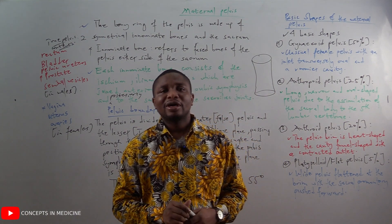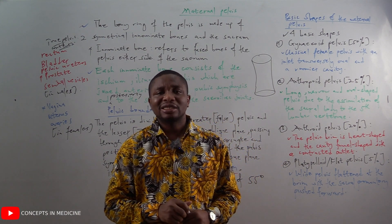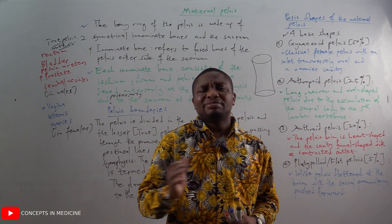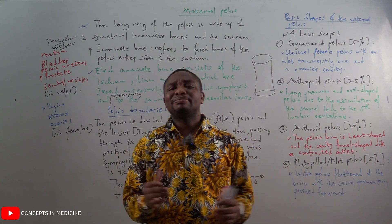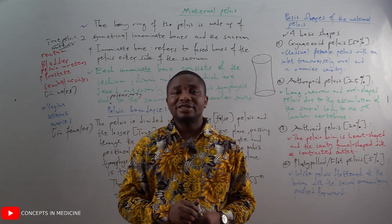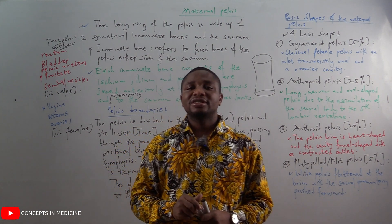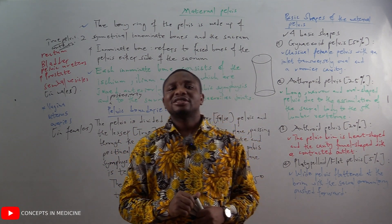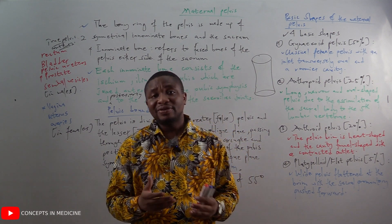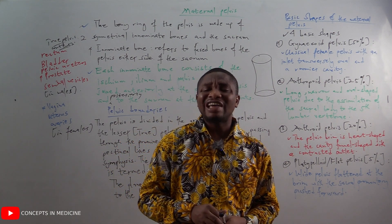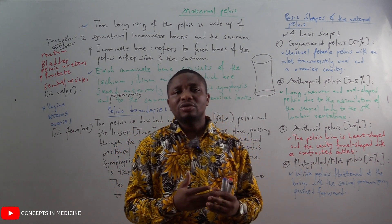The platypelloid, or flat pelvis, is a wide pelvis flattened at the pelvic brim, with the sacral promontory pushed forward. This shape does not favor vaginal delivery and is found in only about 5 percent of the female population.